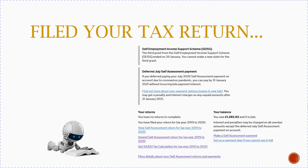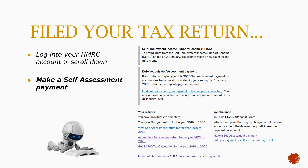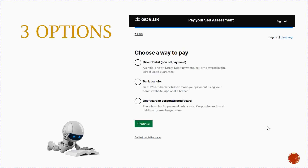What you need to do is log into your HMRC account and scroll down. You'll see a page much like this — this is where previous tax returns are and this is where you'll see your balance, how much you owe, and how to make a self-assessment payment. You'd click on 'make a self-assessment payment'.